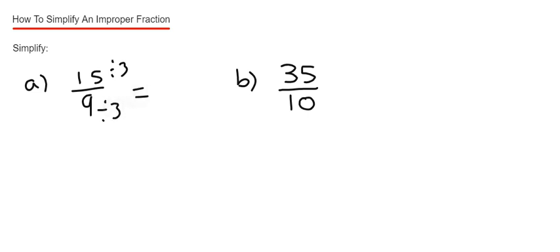15 divided by 3 is 5. 9 divided by 3 is 3. So we get a final answer of 5 thirds.